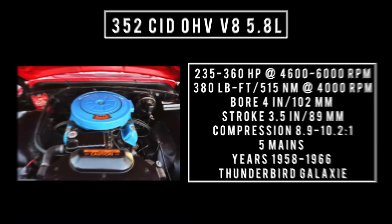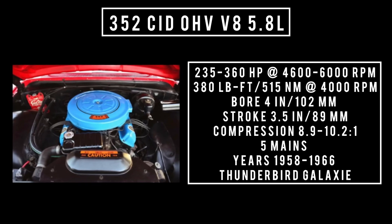Also introduced in 1958 as part of the Interceptor line of V8 engines and was a replacement for the Lincoln Y-Block: the 352 cubic inch displacement overhead valve V8, 5.8 liters. Good for anywhere between 235 up to 360 horsepower at 4,600 to 6,000 RPM, up to 380 pound-feet or 515 newton meters at 4,000 RPM, with a bore of 4 inches and a stroke of 3.5 inches. Compression was 8.9 to 10.2 to 1, with five main bearings. Used from 1958 through 1966 — a staple for Ford, found in the Thunderbird and the Galaxy. The hypo version came in 1960 in the Galaxy at 360 horsepower.